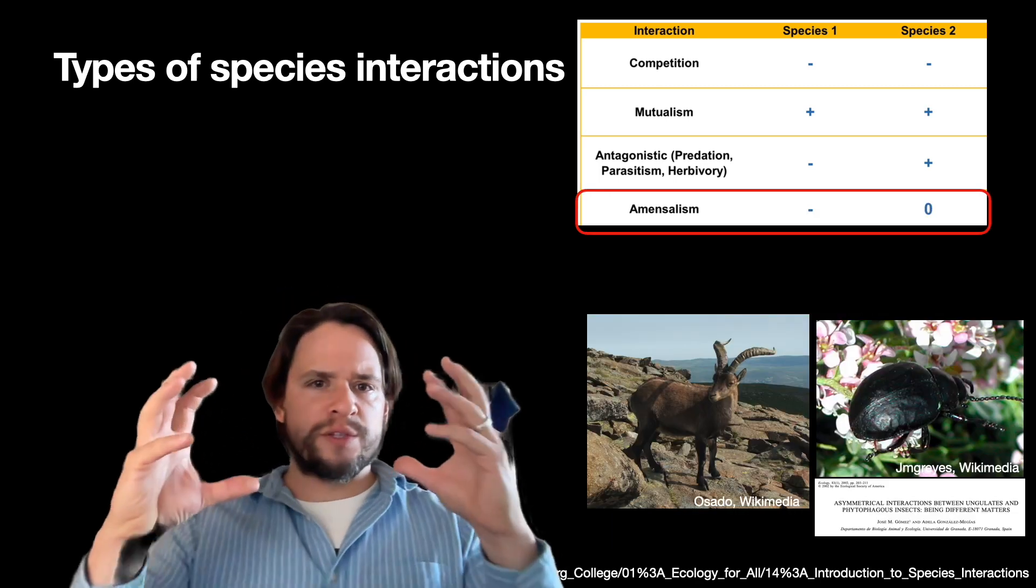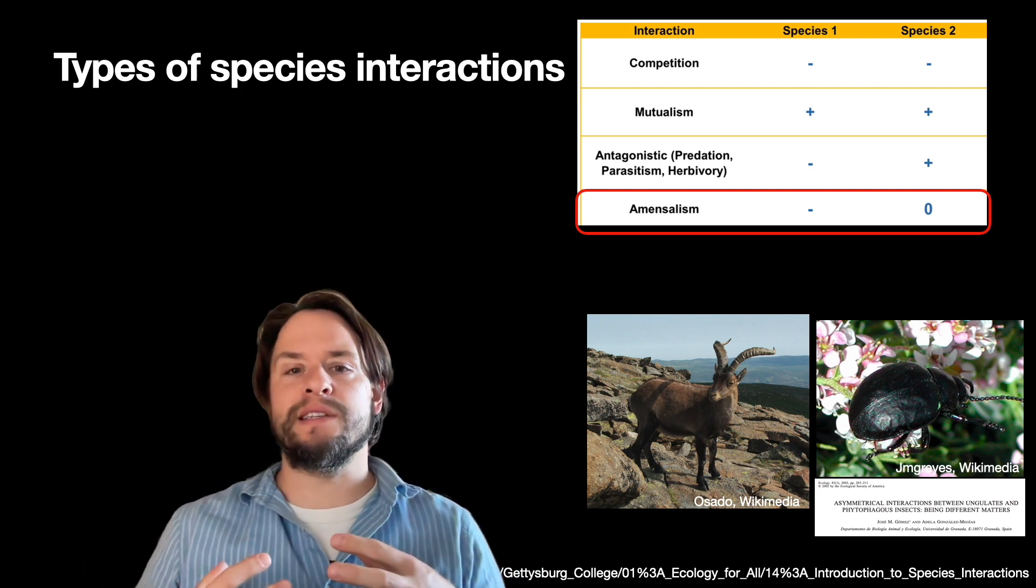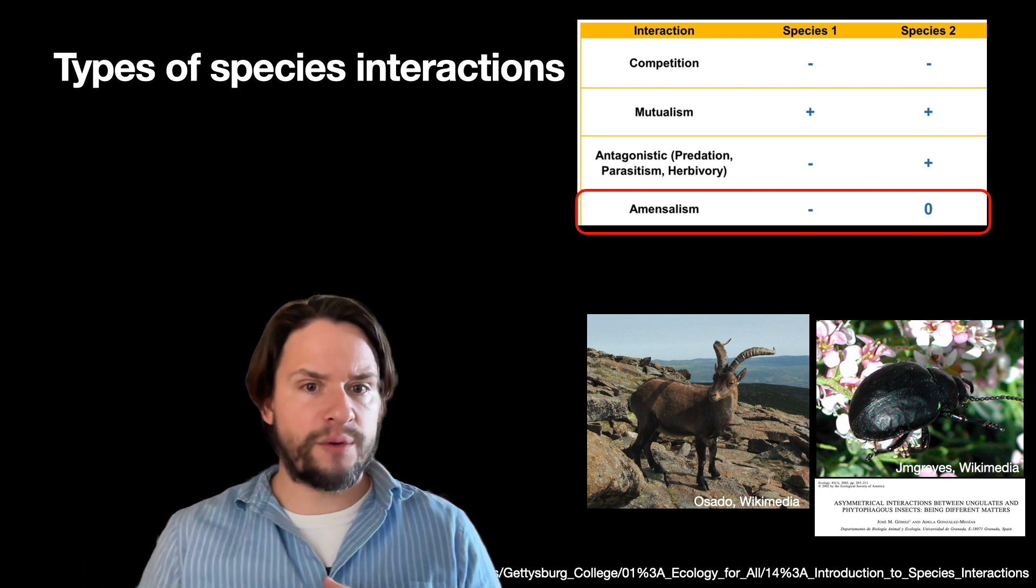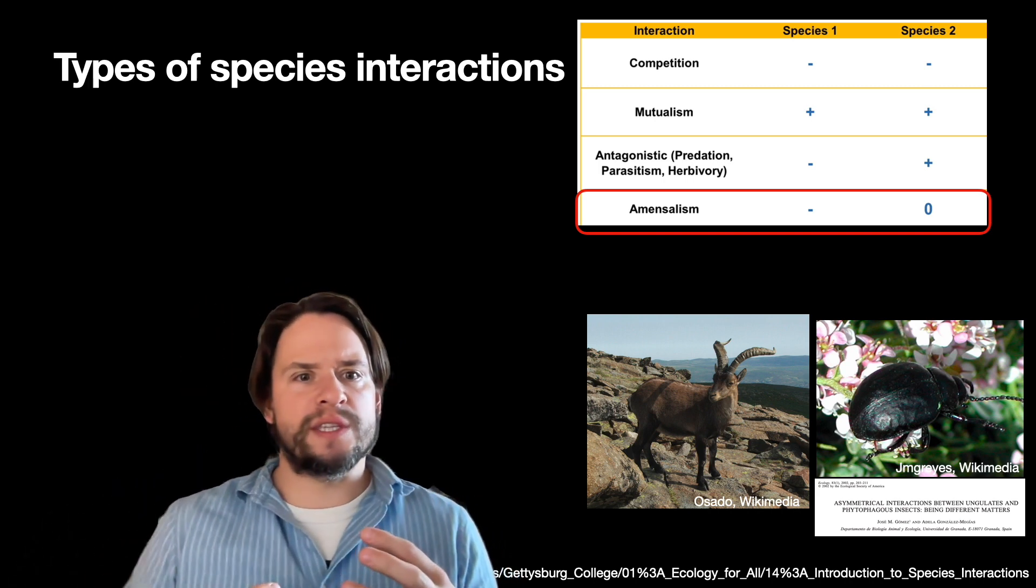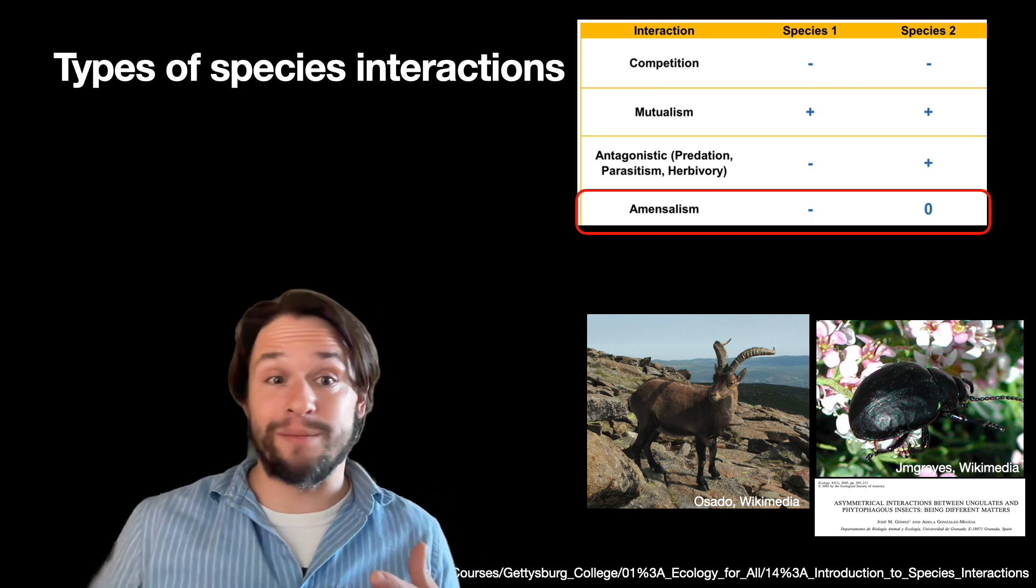And those three—competition, mutualisms, and antagonistic interactions—we can think of as in some ways the stronger interactions. But there are also interactions that still are important but maybe aren't so strong or are strongly asymmetric.